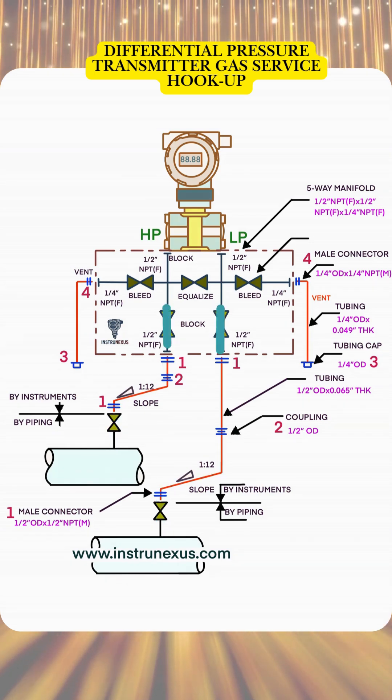Let's understand the differential pressure transmitter hookup with a five-way manifold, one of the most common installations in process industries.